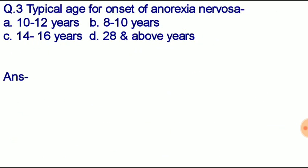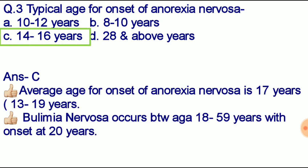Question number three: typical age for onset of anorexia nervosa — option A: 10 to 12 years, option B: 8 to 10 years, option C: 14 to 16 years, option D: 28 and above years. The average age for onset of anorexia nervosa is 17 years, with a range of 13 to 19 years. Correct answer: option C, 14 to 16 years. Note: bulimia nervosa occurs between age 18 to 59 years with onset at 20 years.